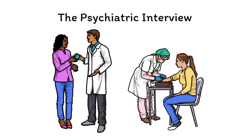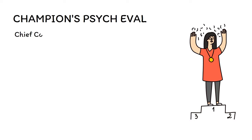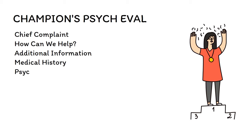There are many elements of the psychiatric interview to remember, so let's use the mnemonic CHAMPION PSYCHEVAL to list them all out. This is an acronym that stands for Chief Complaint, How Can We Help, Additional Information, Medical History, Psychiatric History, Ideation, Orientation, Navigation, and Social Support.